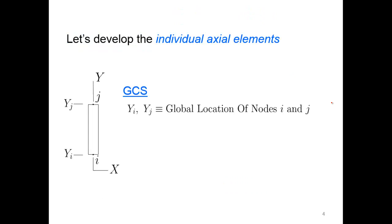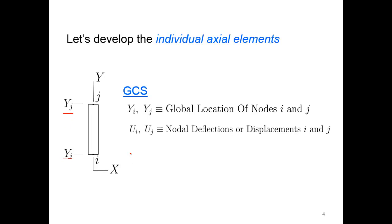Let's develop an individual axial element, one element at a time. We'll have nodes i and j as normal. In this particular orientation, we have the global y-coordinates yi and yj — those are the global locations of those nodes. There are going to be nodal deflections at both nodes, represented by capital U. The length between those two nodes is equal to the difference in the y-components at node j and node i, so we can determine what that L value is.